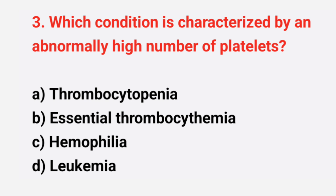Question number 3: which condition is characterized by an abnormally high number of platelets? The right answer is option B, essential thrombocytemia.